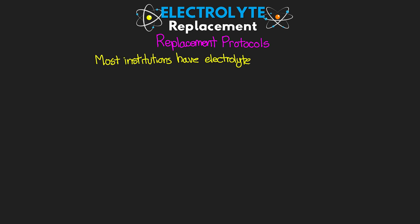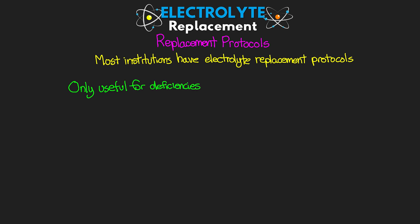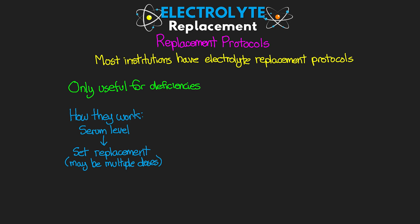Let's talk about some of our replacement protocols. In most institutions, we have electrolyte replacement protocols that give us very clear guidance for what and how to replace these electrolytes. Our electrolyte replacement protocols are only useful for deficiencies — there are certainly complications when levels are too high, but that's a talk for another day. The way the protocols work is we take the patient's serum electrolyte level, and based on whatever that level is, we have a set amount of replacement to give. Patients with renal dysfunction may receive reduced doses, sometimes with a separate protocol, or may be completely managed by the provider.